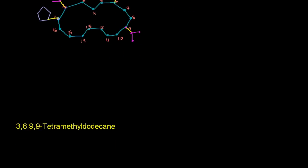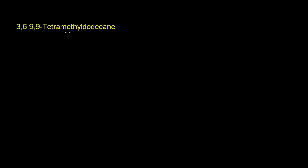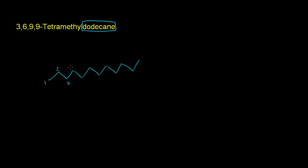Let's do another one — I think we're getting the hang of it. Maybe we could do this one a little bit faster. We have a tetramethyldodecane. The main root here is the dodecane — 'doe' for 2, 'dek' for 10 — this is a 12-carbon chain. It's not in a cycle, so let me draw it out: 1, 2, 3, 4, 5, 6, 7, 8, 9, 10, 11, 12. We can number them arbitrarily: 1 through 12. That's the dodecane, all single bonds.